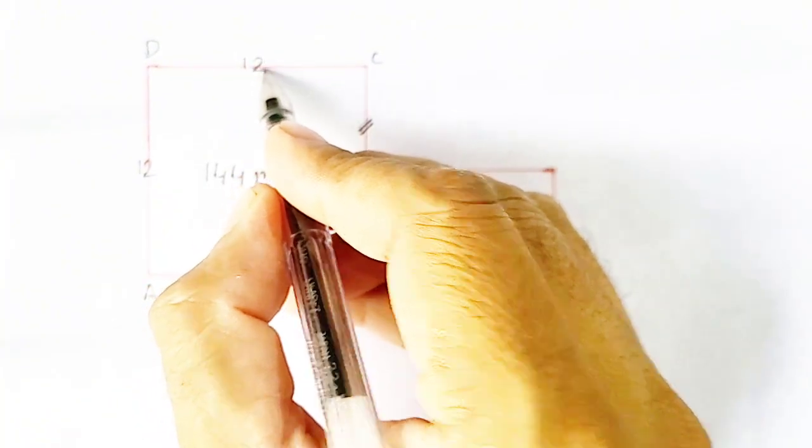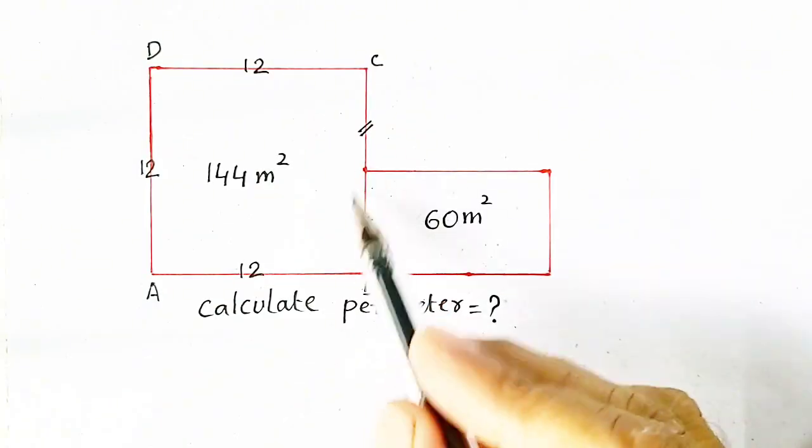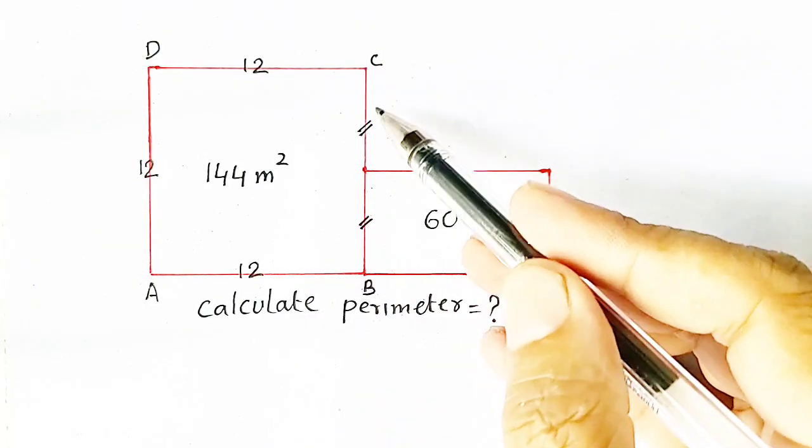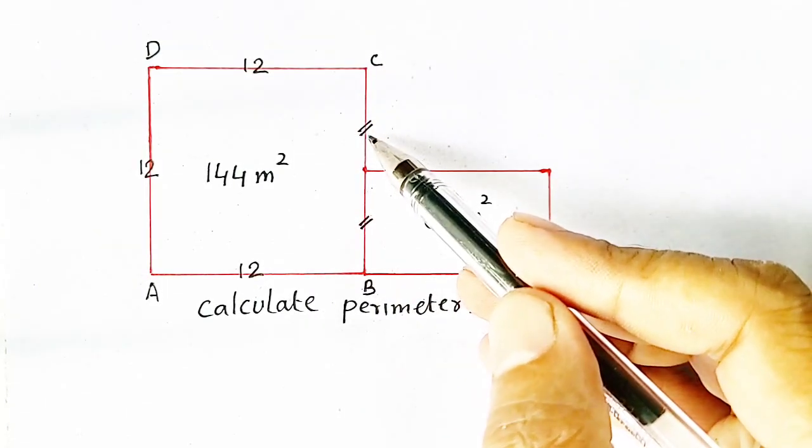And it is also equal to 12. And this, as a whole, mean BC will also be equal to 12.